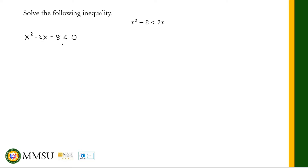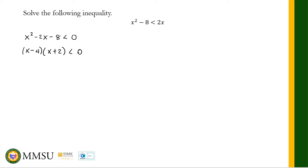All terms go to the left part of the inequality, and zero remains on the right side. We will now factor the left part — the polynomial. What are the factors of negative 8 that when added together give negative 2? We have negative 4 and positive 2, so the factors are (x minus 4)(x plus 2) less than zero.